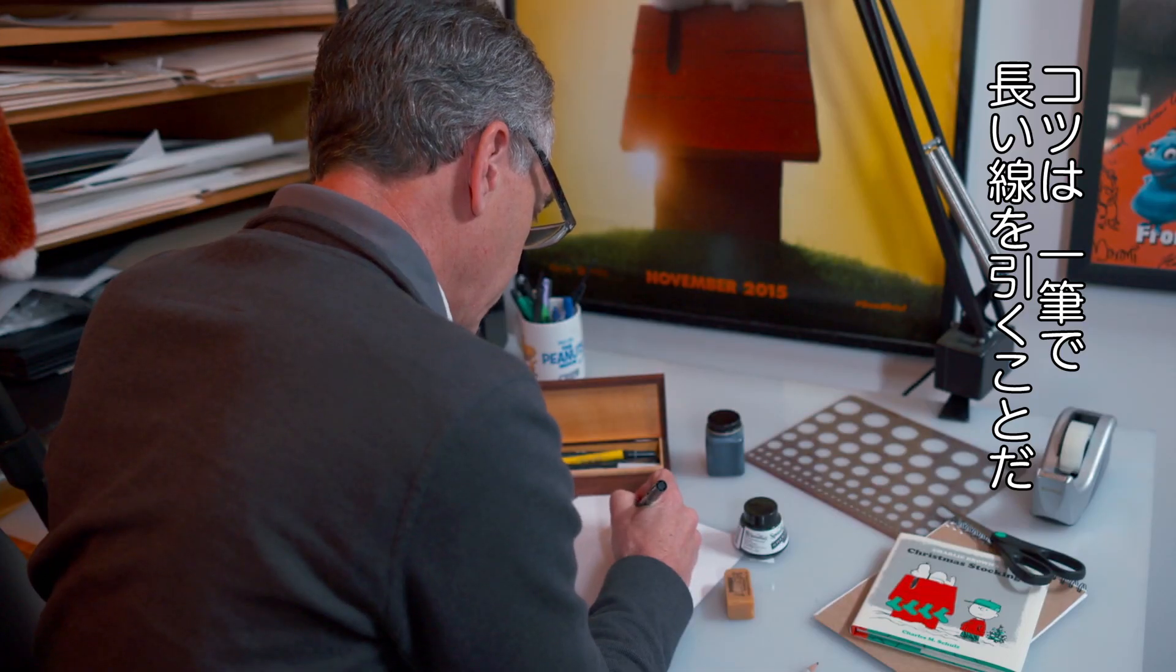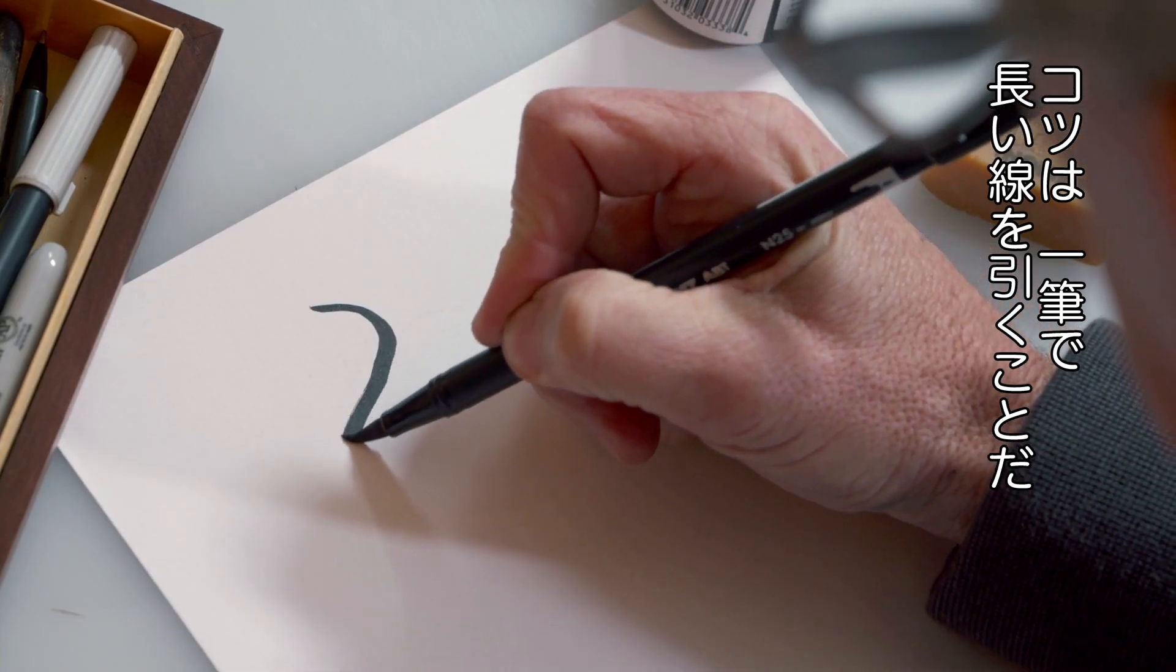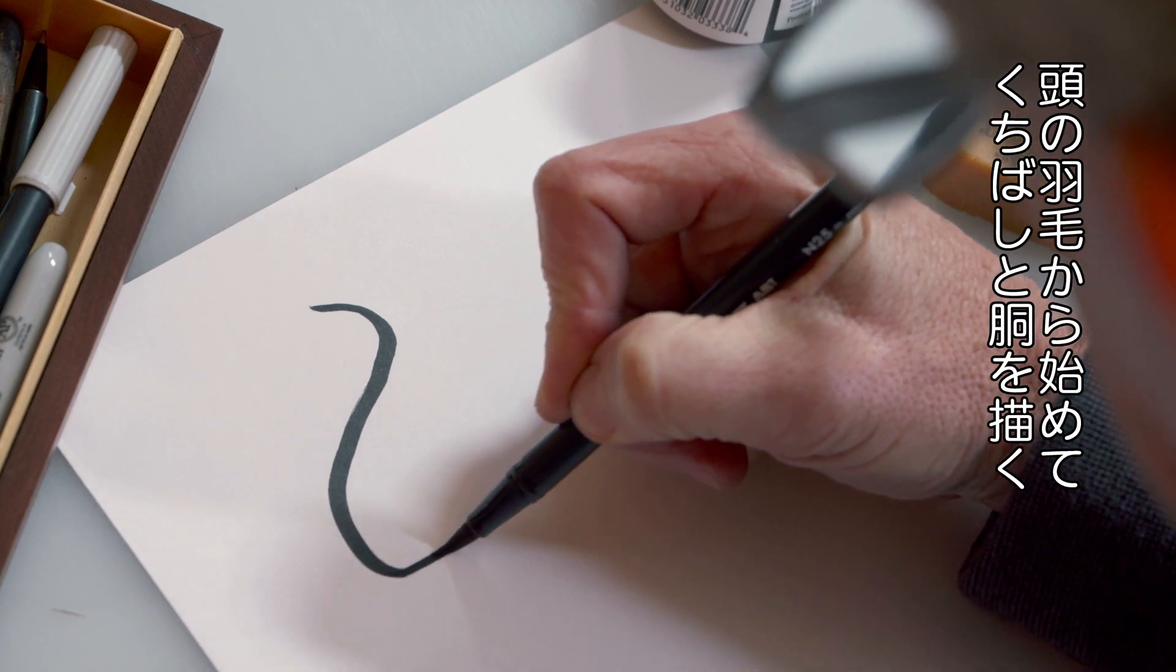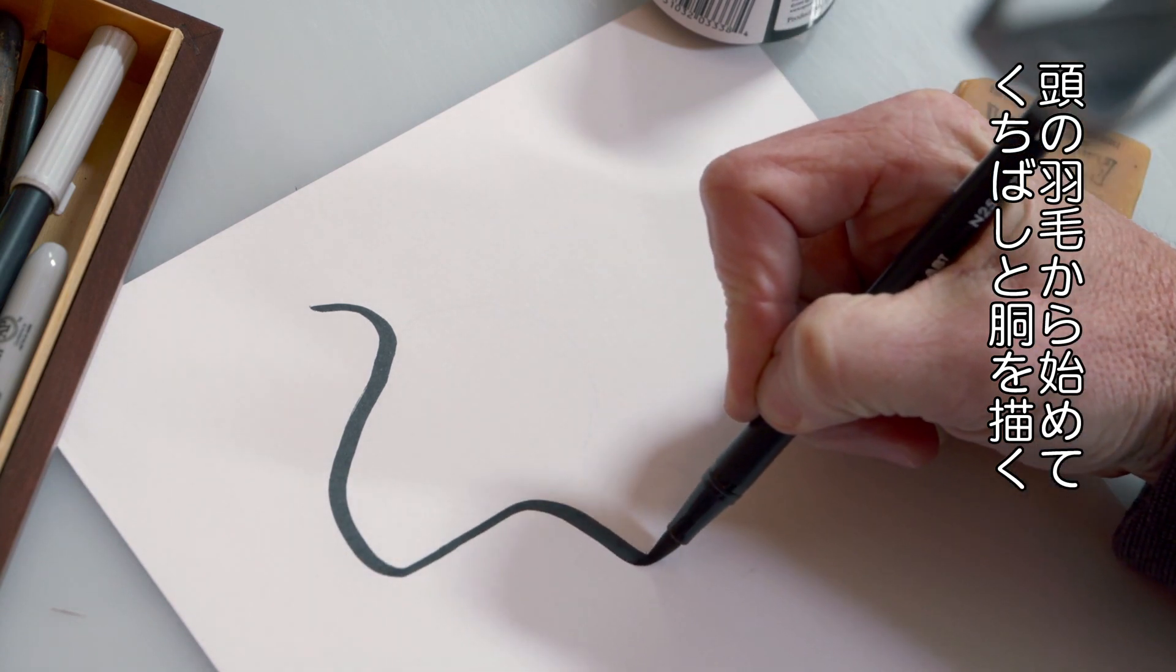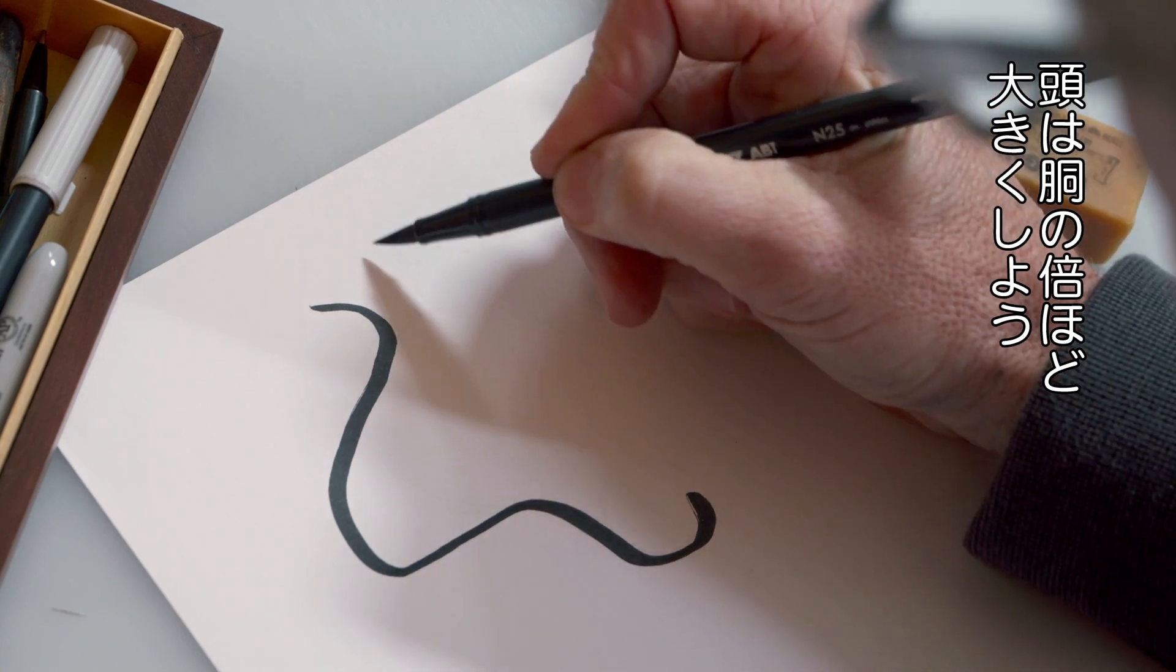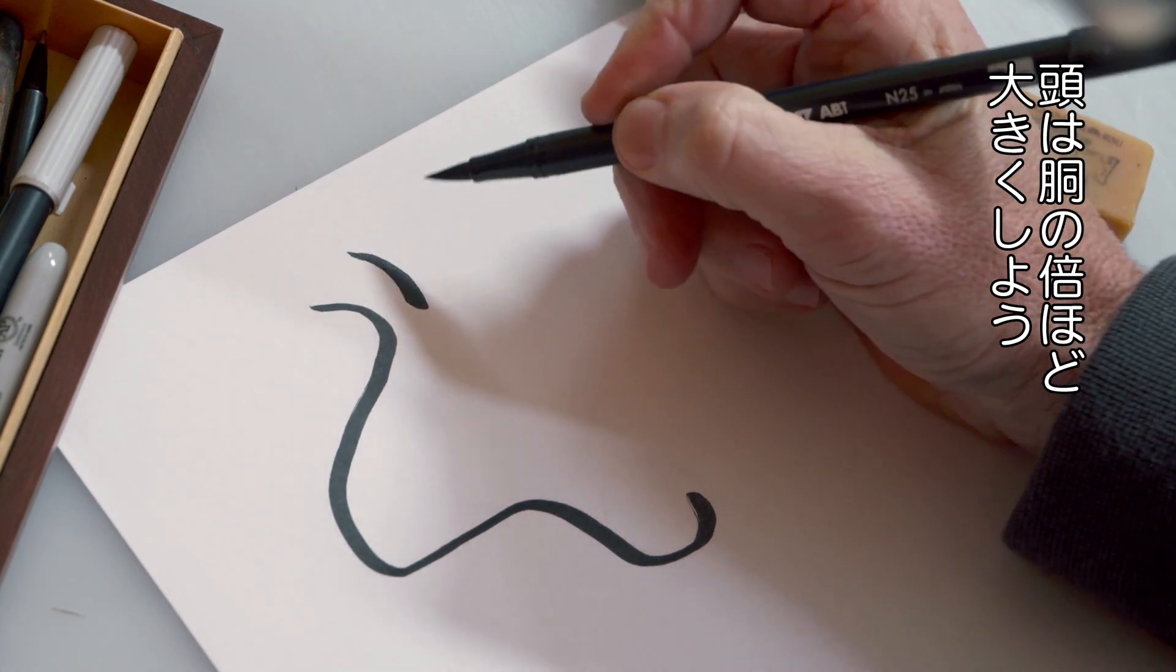The secret to drawing Woodstock is to use long continuous strokes. I started his very top feather, come down around his beak, and remember that Woodstock has a very big head, about twice the size of his body.